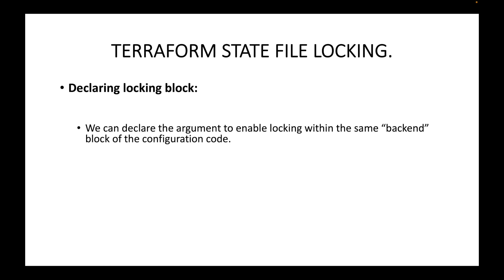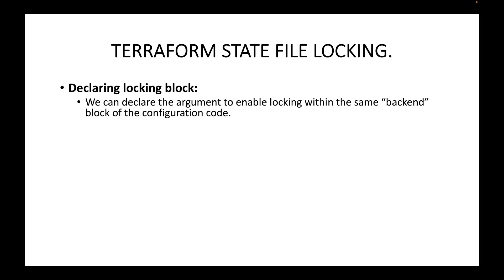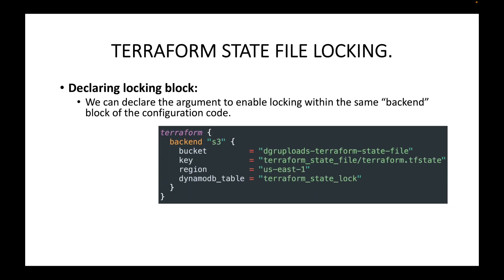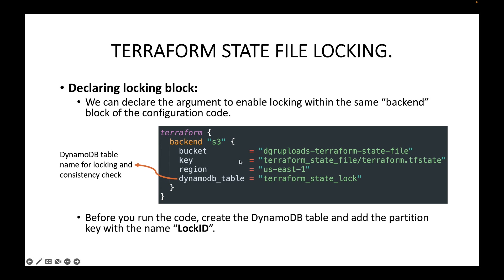To declare locking, you add an argument within the same backend block. You declare the argument dynamodb_table and provide the name of the DynamoDB table you have created — this is what will be used to lock your state files. Before running the code, make sure you have that table created with a partition key named LockID.